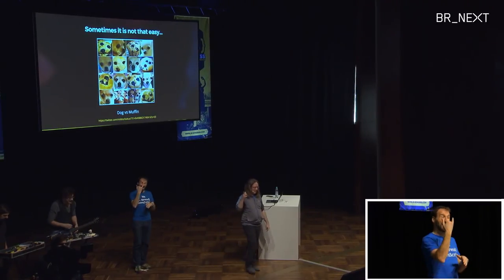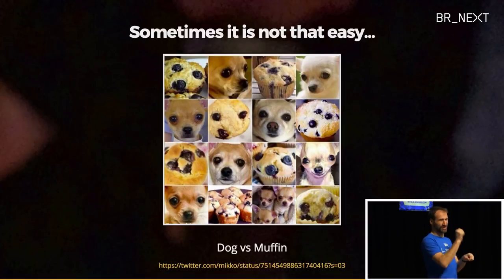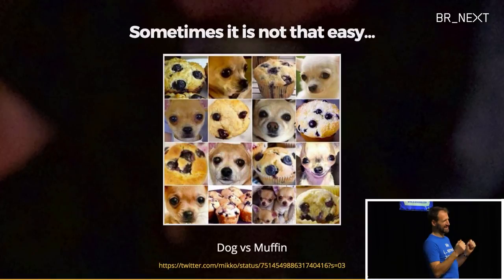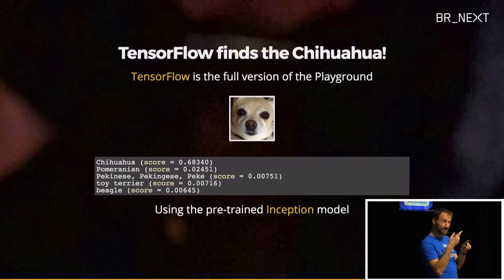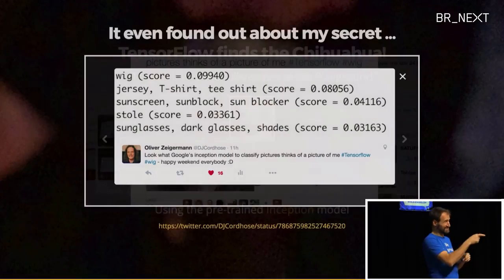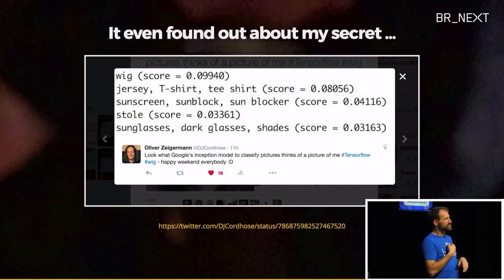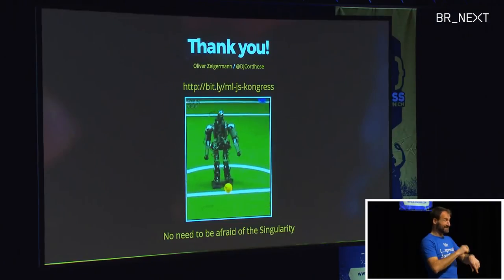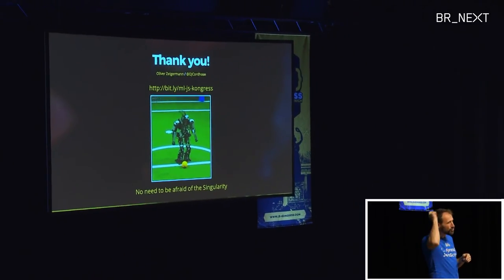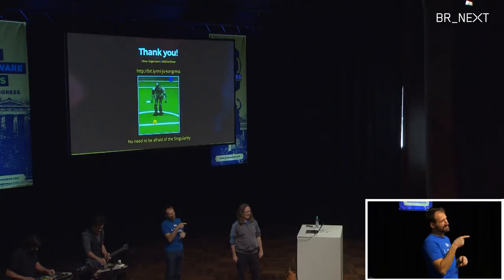My final example — telling the dog from the muffin — is super hard. I took a Shiba Inu, had no idea it was a Shiba Inu, put it into this thing provided by Google, and it tells me with 68% certainty it's a Shiba Inu. Then the other thing is a Pomeranian — also a dog. It did better than me. It's pre-trained, it runs on your machine, you can just download it. I also fed in a picture of myself and with 10% certainty it says I'm wearing a wig — so it found out about my dirty secret. With that, I'm exactly out of time. Thank you. And if you're afraid of the singularity, look at the current state of the art in robotics.